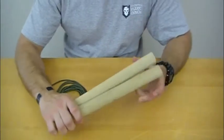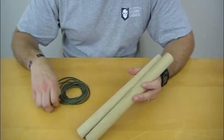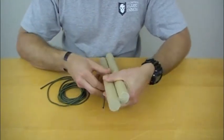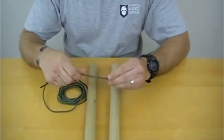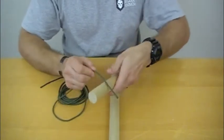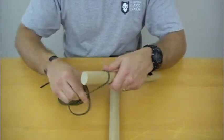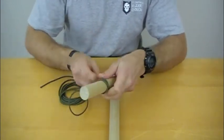Alright, welcome to ITS Tactical's Knot of the Week. Today we're going to be doing a round lashing and the start of a round lashing is going to be done with a clove hitch, so you're going to take one of your posts here and start a clove hitch.